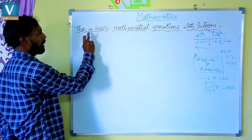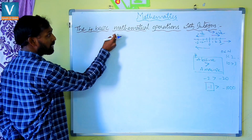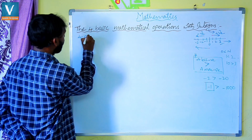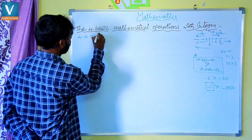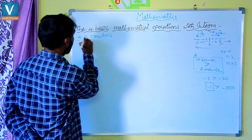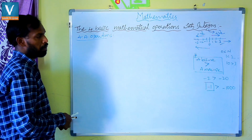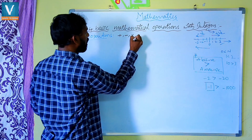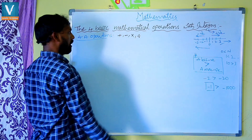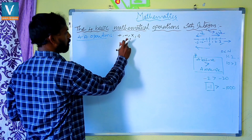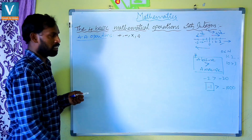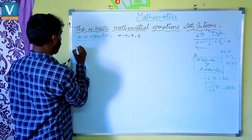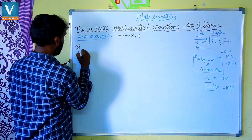So the topic now is the four basic mathematical operations with integers. We are having four arithmetic operations: plus, minus, multiply, and divide — that is, addition, subtraction, multiplication, and division. We will see these operations under positive and negative integers. First, I am taking addition and subtraction.